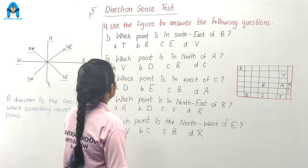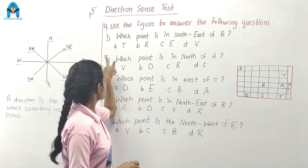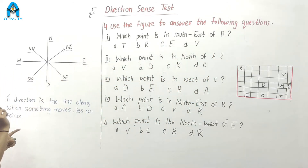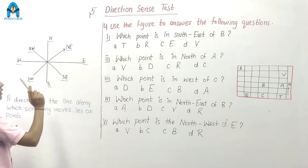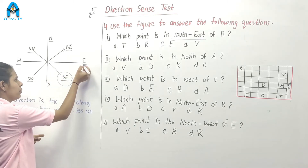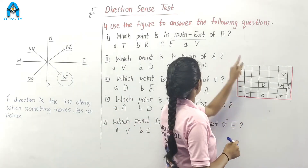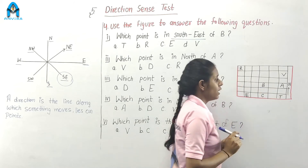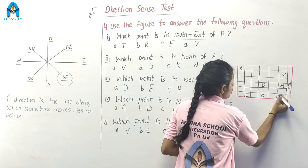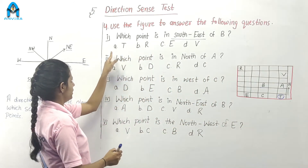Question number 4. Use the figure to answer the following questions. Question 1: Which point is in the southeast of B? The middle of east and south is called southeast. Looking at the figure, the letter that comes in the southeast of B is T. Our correct option is option A — T.